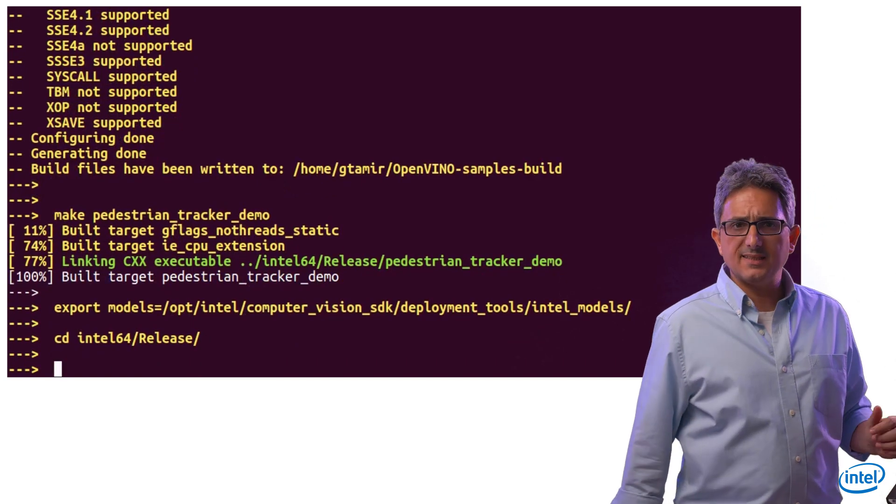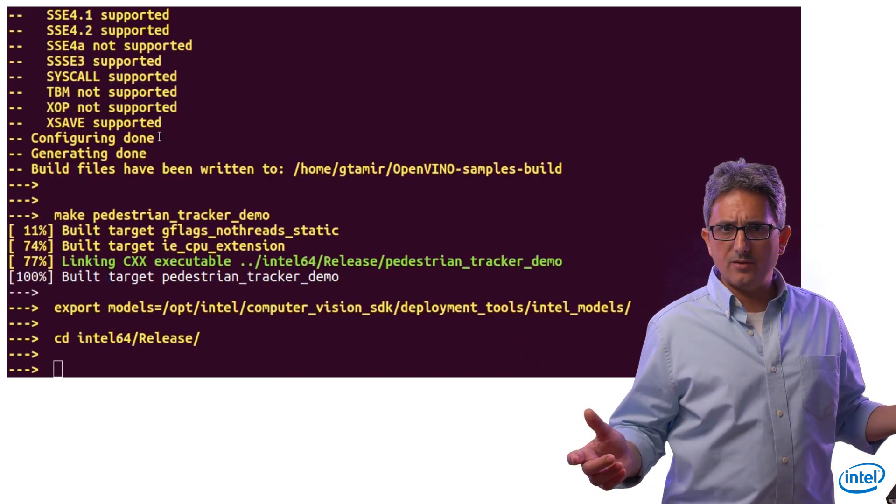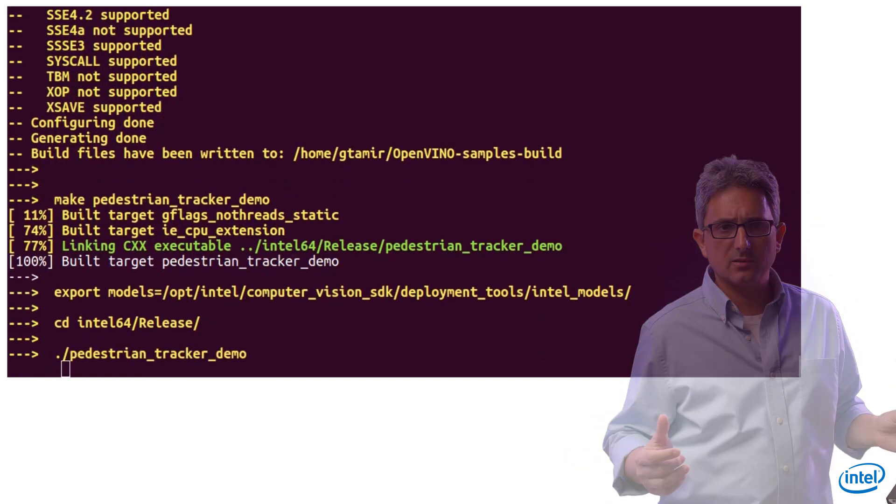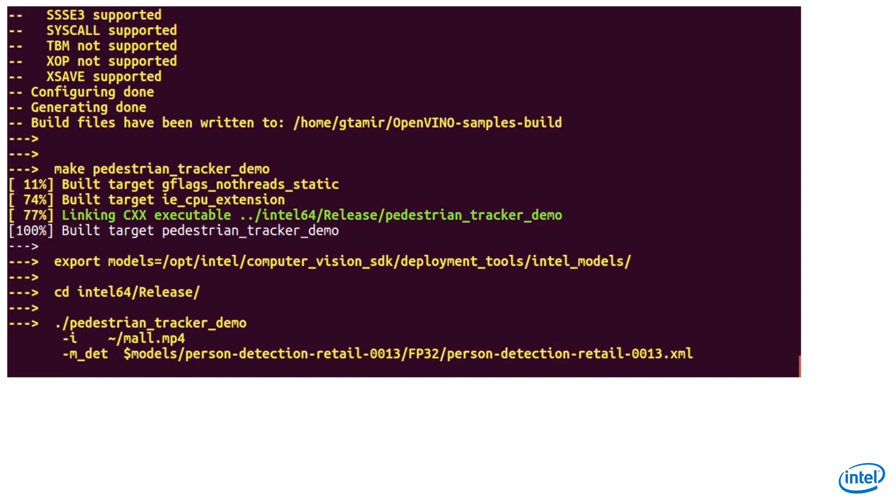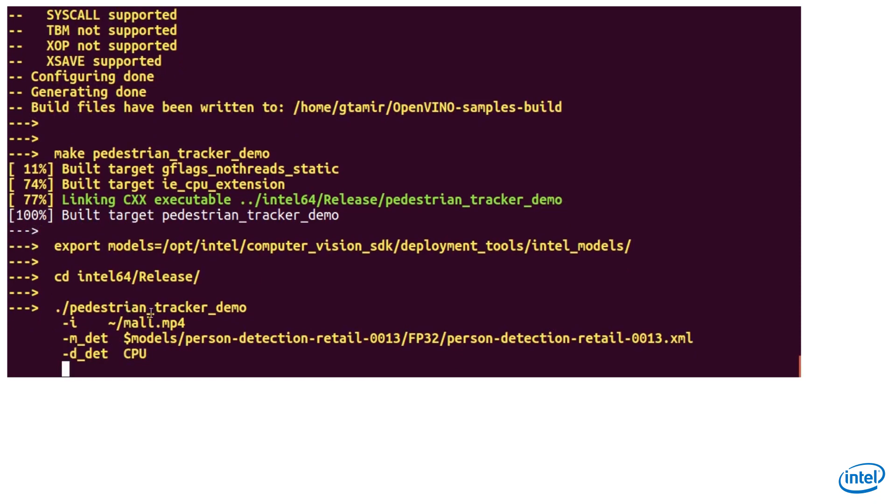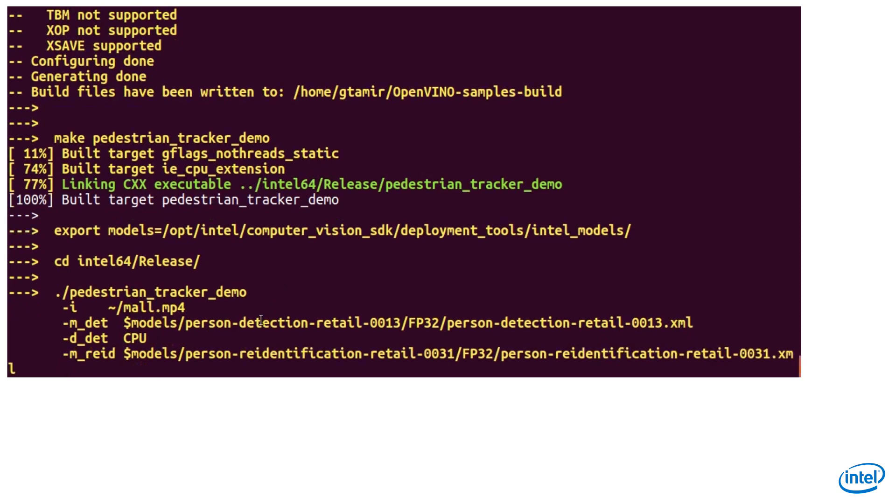And running the sample is easy. You can copy all the text from the transcript. So dash i is the input file, could be a video or set of images. Dash m underscore det need to direct to the person detection model. Dash m underscore reid need to direct to the re-identification model.